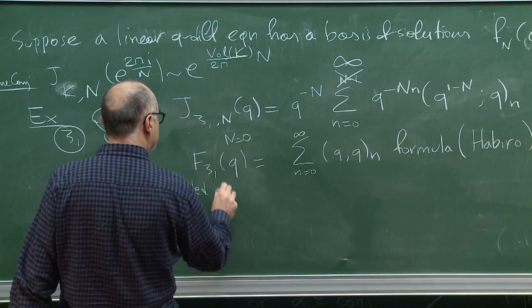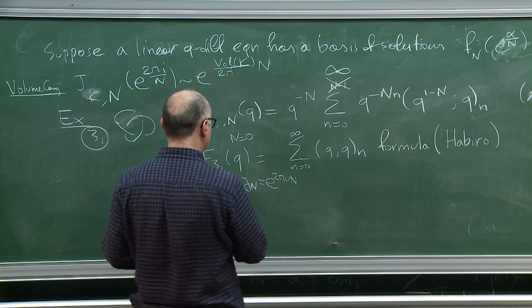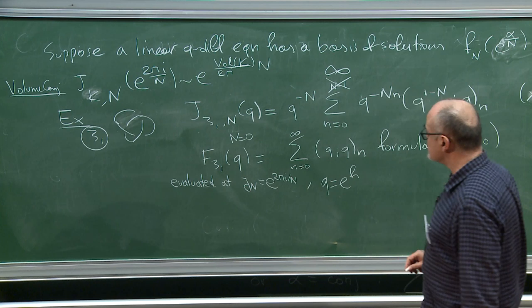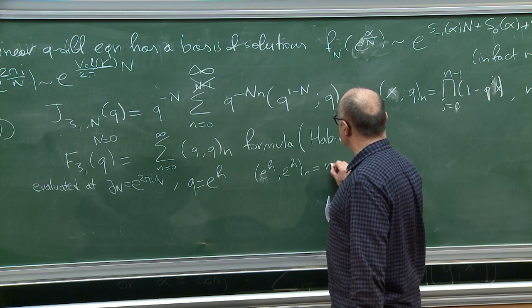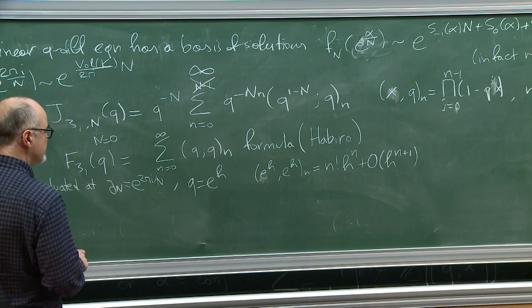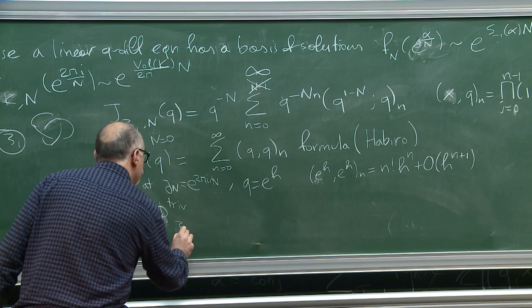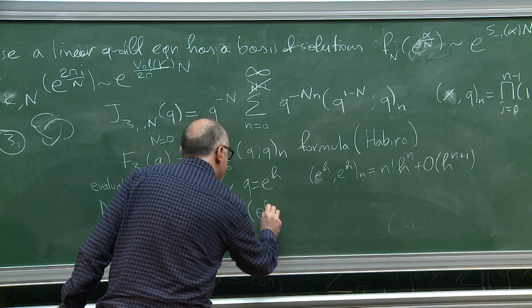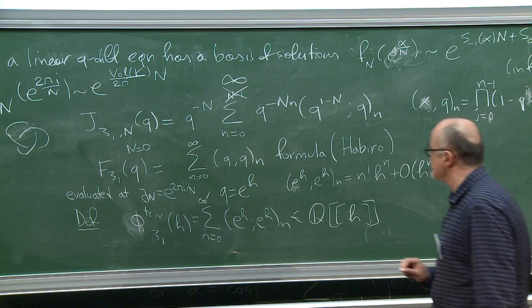The reason it can be evaluated at q = e^{h̄} is that (e^{h̄})^n = n! h^n/n! + O(h^{n+1}). So one can define the perturbative trivial series, which I'll call Φ_trivial(h̄), as a formal power series in h̄ with rational coefficients. This series is Gevrey-1.